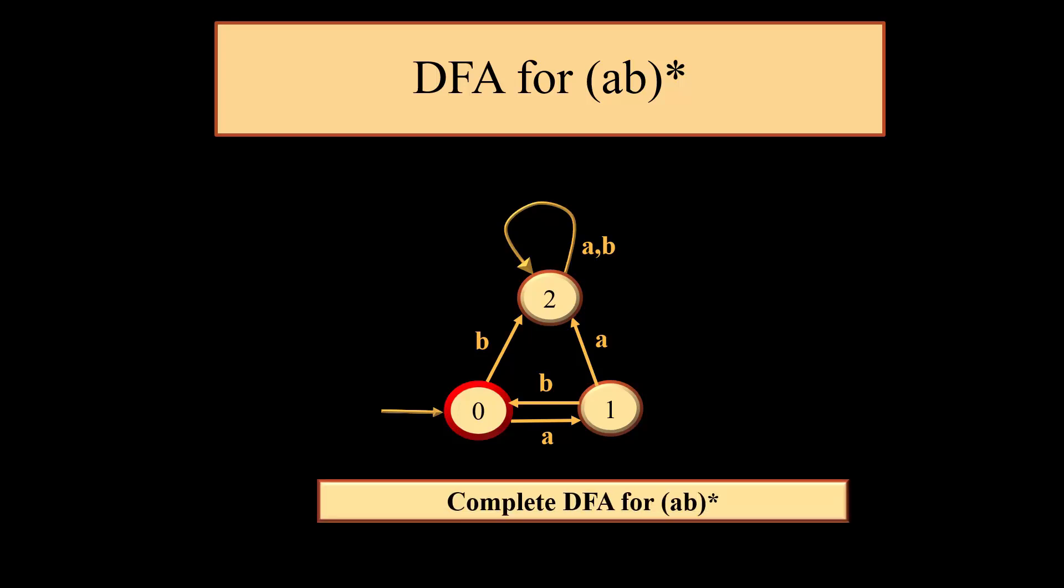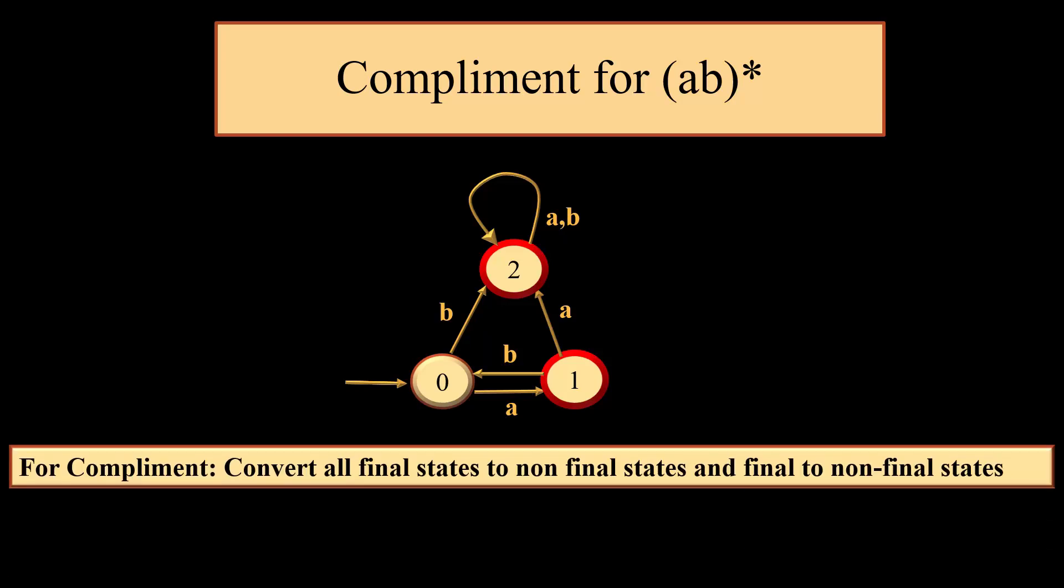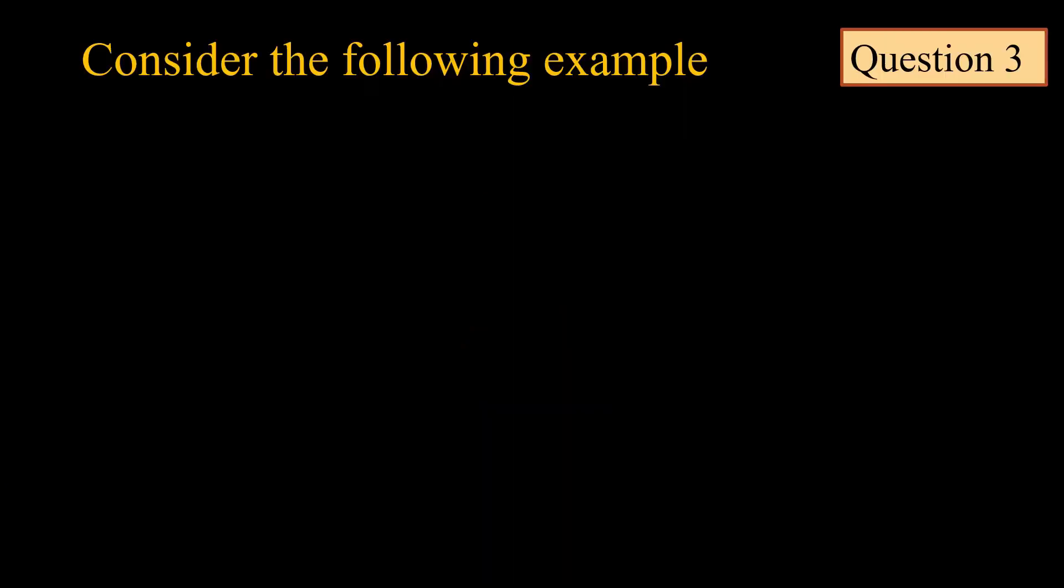In order to find the complement, we just need to make all final states as non-final states and all non-final states as final states. So this is the final output which we get. This is the complement of AB whole star.